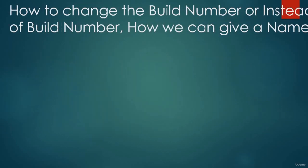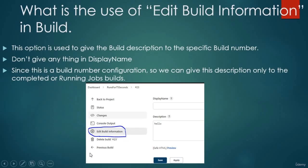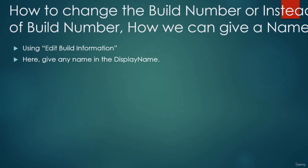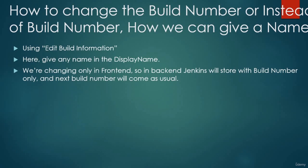Now let's see how to change the build number or give a name instead of a build number using 'Edit Build Information'. In the earlier session we already discussed this option. What is the use? To give description to completed jobs. At that time I said don't give any name in the display name. If you give a name in display name, it will replace the build number in the front end. But the back end — Jenkins will still store and use the build number as usual.